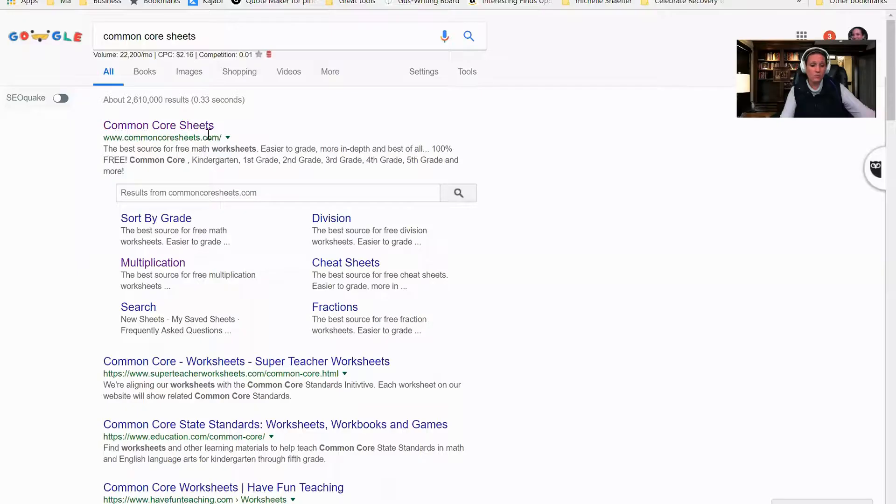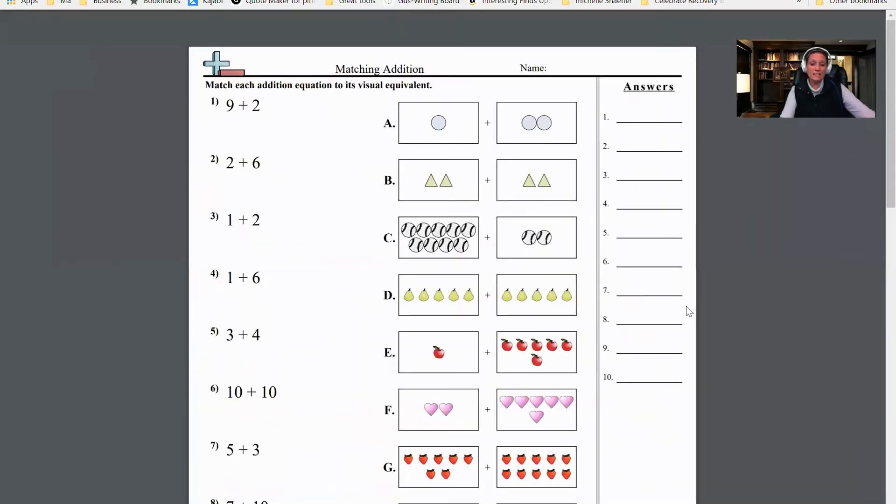So I always choose Desktop, and then you can go to commonccoresheets.com. If you forget what it is, you can just throw that into Google and it will find it for you. It'll be the first thing that comes up, and then you're going to be able to create different worksheets.